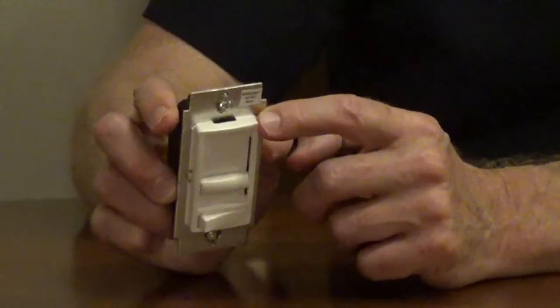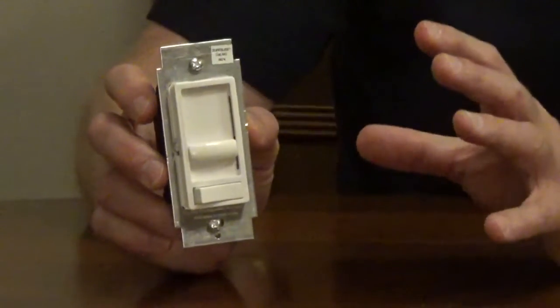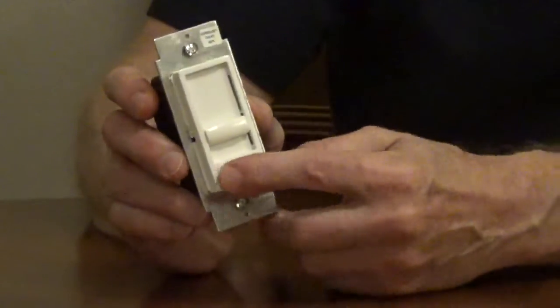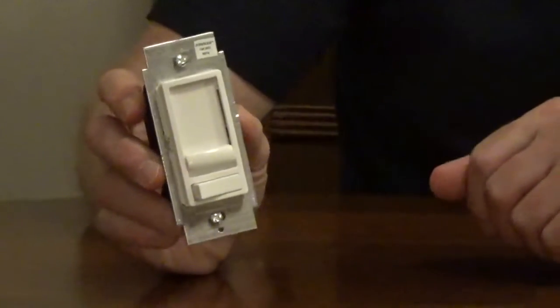You're now going to turn that switch to LED, and that's going to lock in the minimum load for that bulb. You should see a momentary flash, and now you can turn this on and off, and you can move it all the way up and down, and you'll have no flickering.